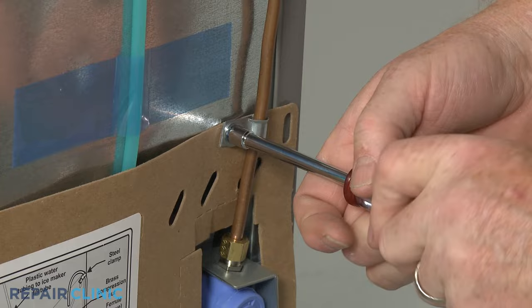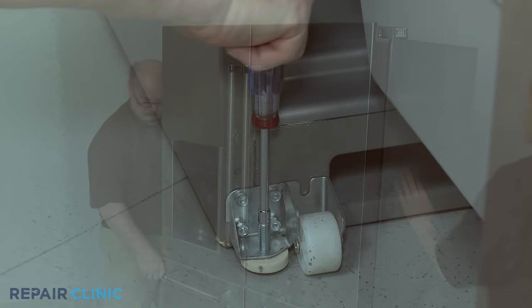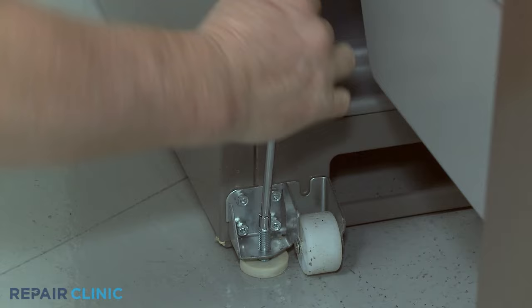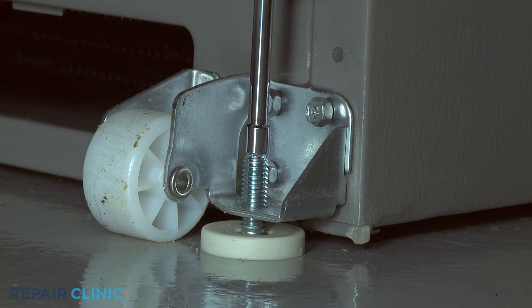Roll the refrigerator back against the wall. If applicable, lower the front leveling legs until they are in contact with the floor. Replace the base grill as necessary.